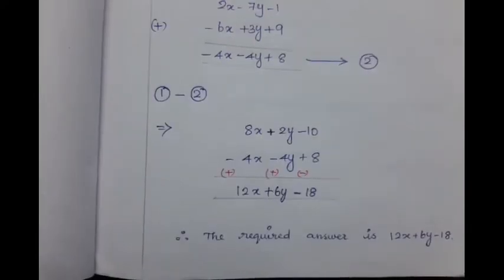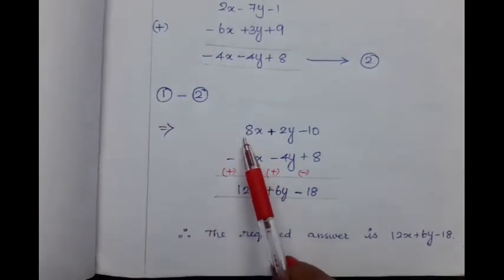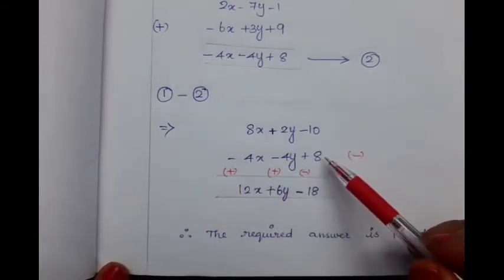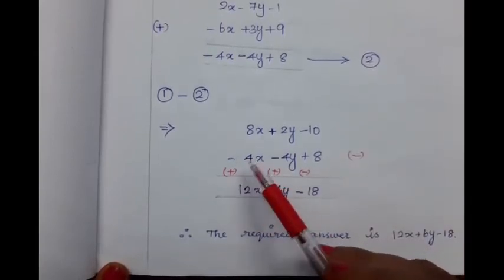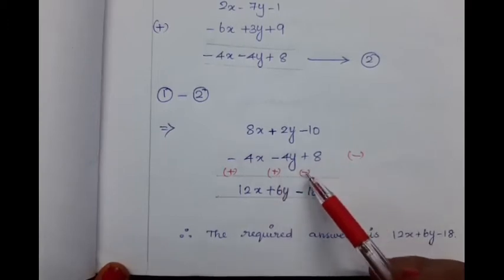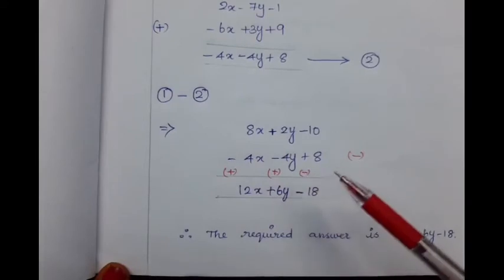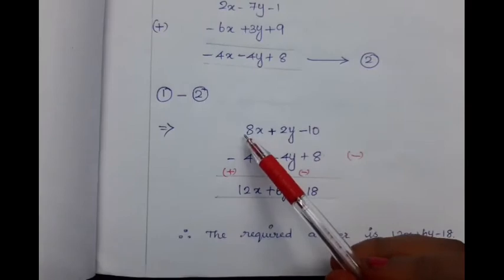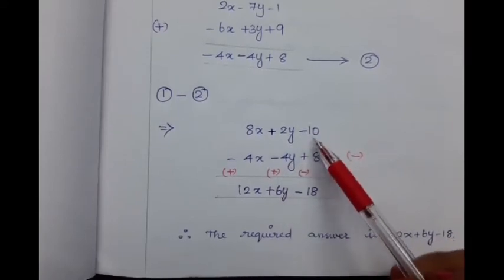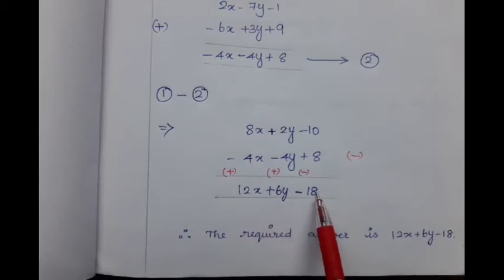For finding the required answer, we need to subtract the sum of the second part from the sum of the first part. We write: 8x plus 2y minus 10 minus (minus 4x minus 4y plus 8). Before subtracting, we need to change its sign: minus 4x becomes plus 4x, minus 4y becomes plus 4y, plus 8 becomes minus 8. After changing the sign, we add: 8x plus 4x gives 12x, 2y plus 4y gives 6y, minus 10 minus 8 gives minus 18. Finally we get 12x plus 6y minus 18, which is the required answer.